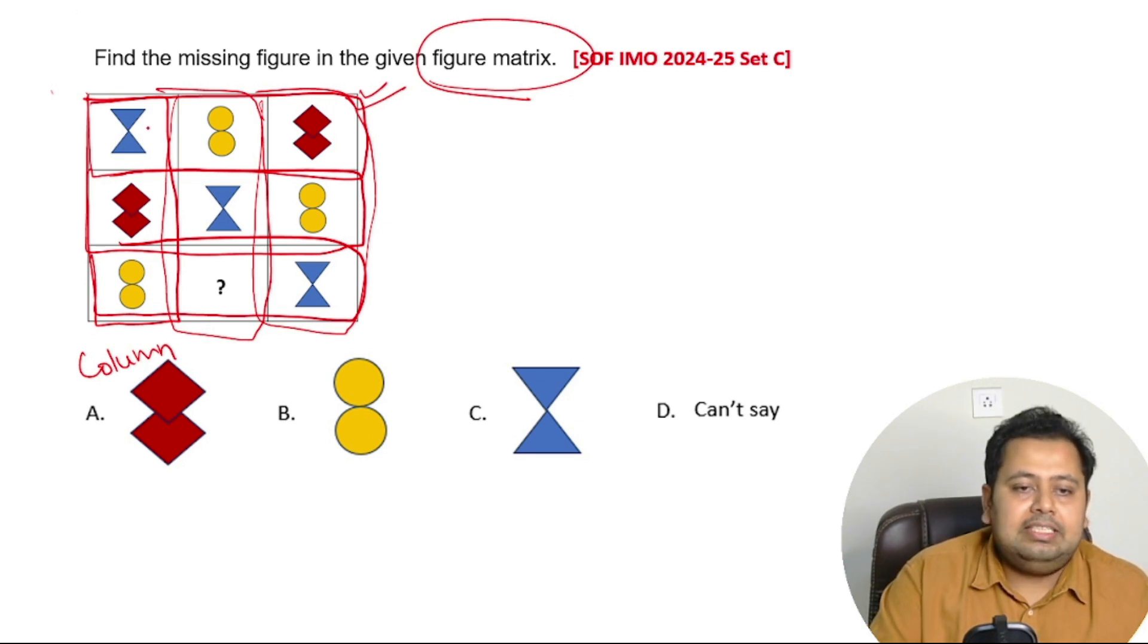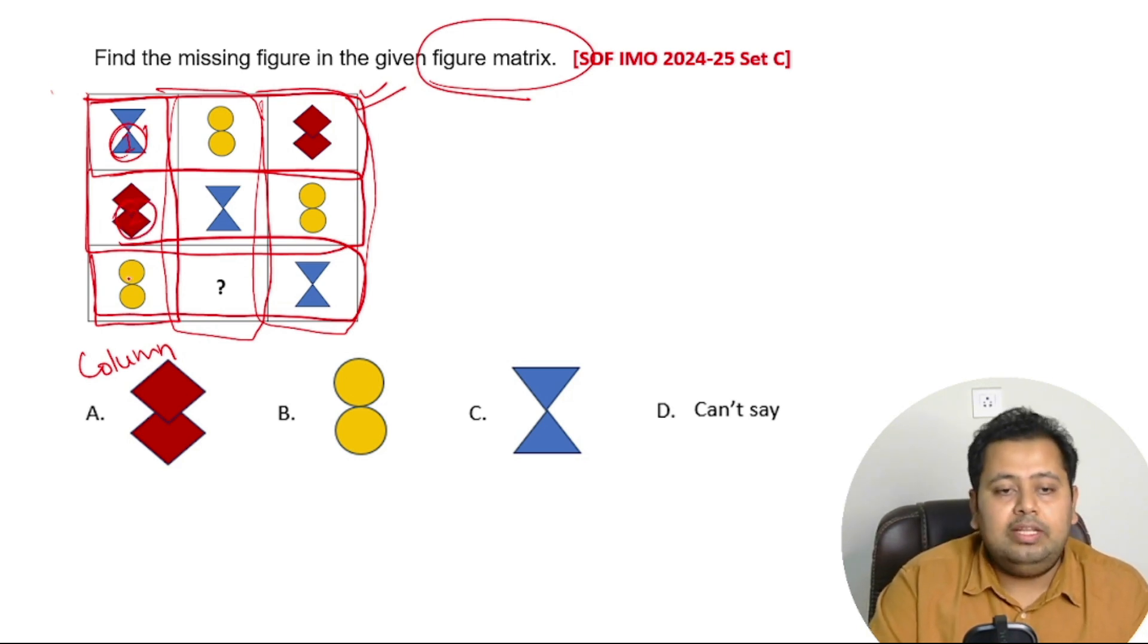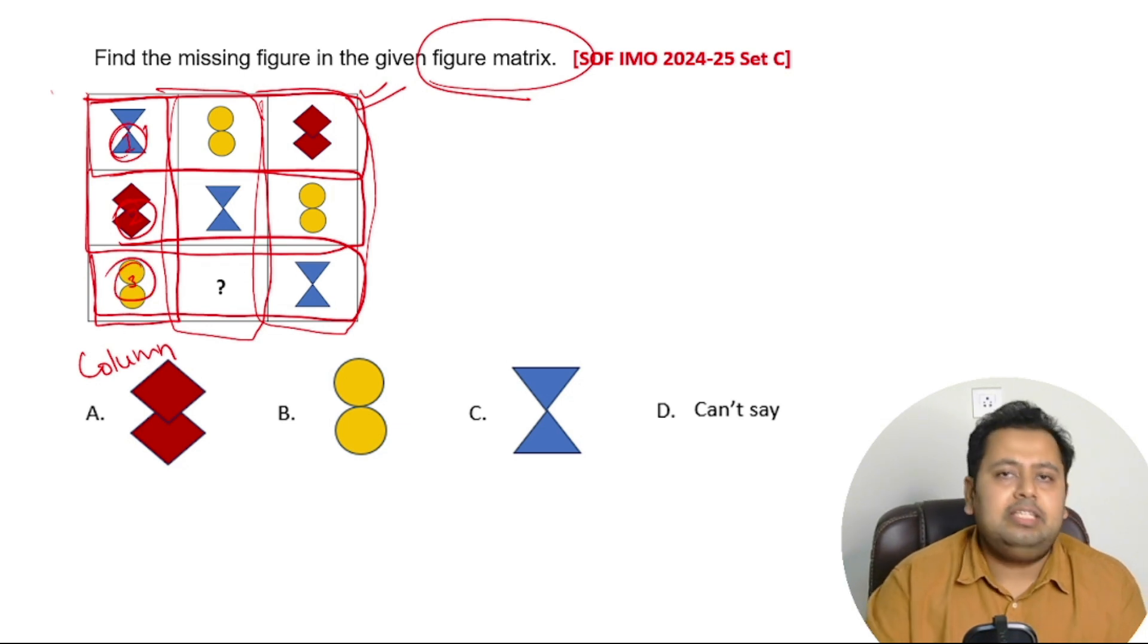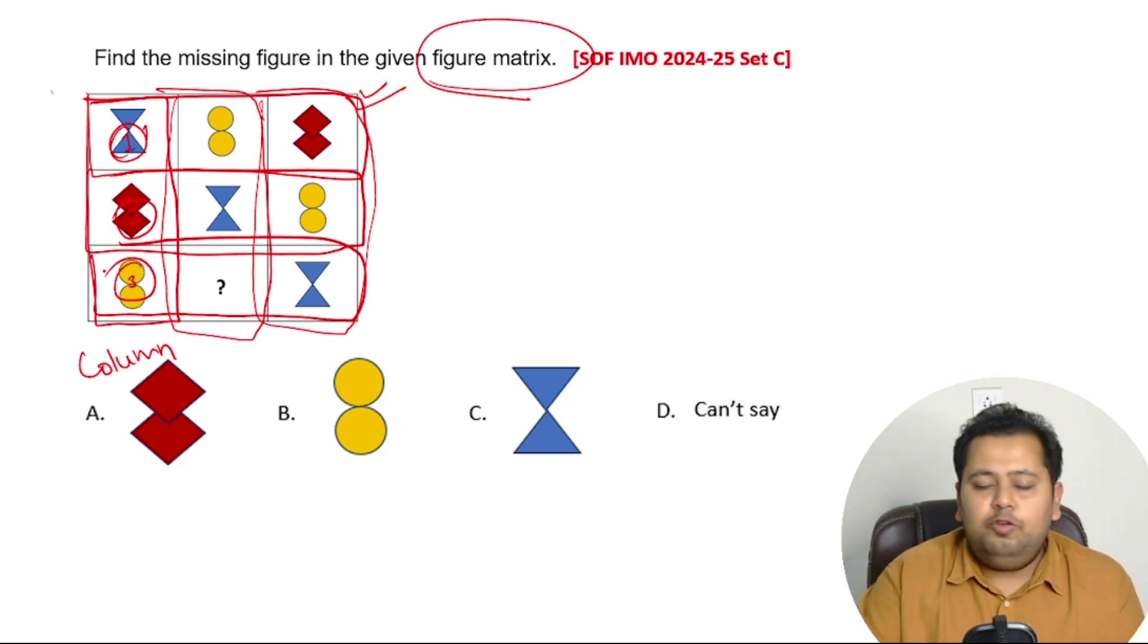Let's just say that this triangular figure is figure number one, the square figure is figure number two, and the circular figure is figure number three. Now if you go any row, if I just check this row, you have figure number one here, this is figure number three, this is figure number two.